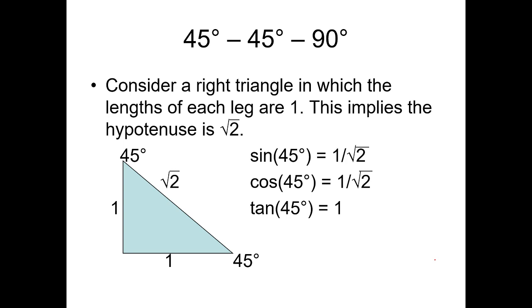Consider a right triangle in which the lengths of each leg are 1. This implies the hypotenuse is square root of 2. Using the Pythagorean theorem, you have a squared, which is 1 squared, plus 1 squared. Therefore, your hypotenuse is square root of 2.